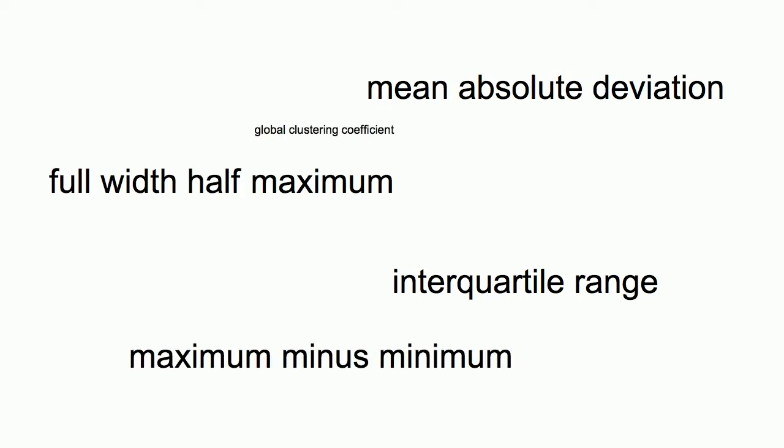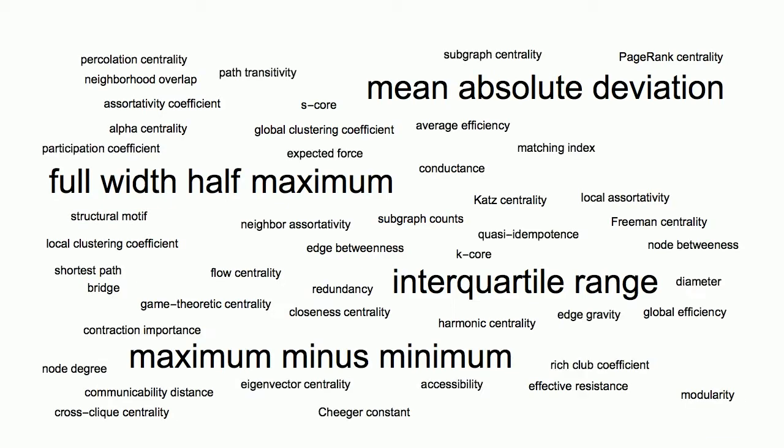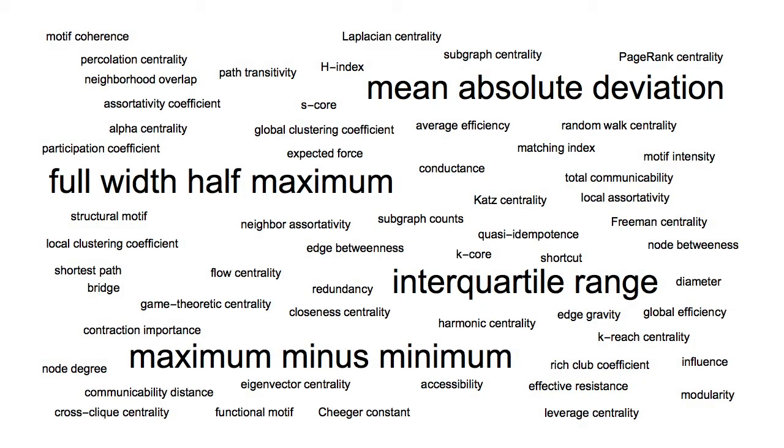This is essentially the current state of network science. Proposed summary statistics are as diverse as the networks they intend to describe, and a standardized hierarchy has not yet been established.